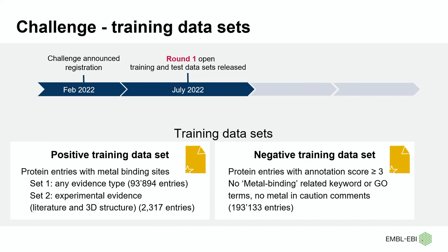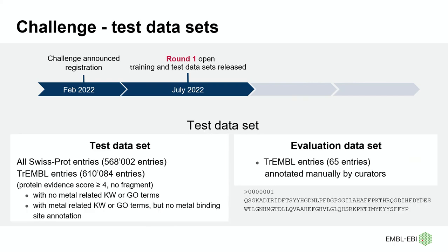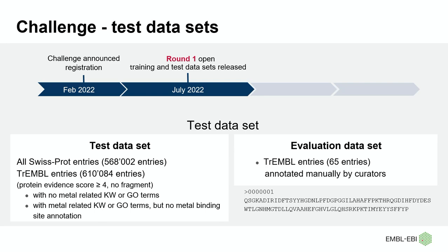The negative training dataset contains SwissProt entries with an annotation score above 3, but with no metal-binding-related keywords, GO terms, or metal mentions in their comments. The test dataset, on which participants had to make their predictions, contains all SwissProt entries and a selection of TrEMBL entries with protein existence score above 4, excluding protein fragments. These TrEMBL entries were either entries with no metal-related keywords or GO terms, or proteins with metal-related keywords but no metal-binding site annotation. Curators selected 65 TrEMBL entries for manual annotation to be used as the evaluation set.